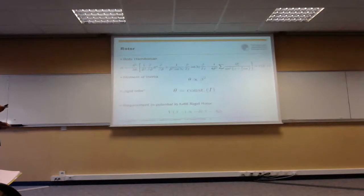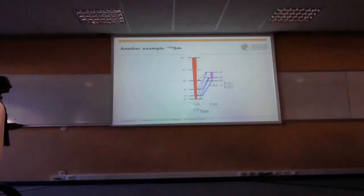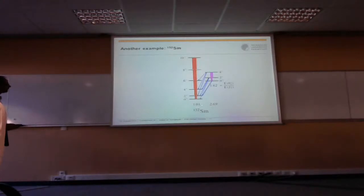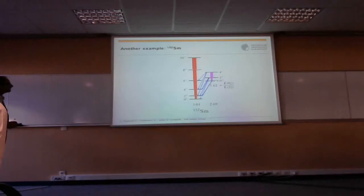Another example: Samarium-152 has historically played a very important role. There is the ground band with R42 = 3.01. There is also another K=0 band with 0+, 2+, 4+ and other states. This band has an R42 ratio of 2.69, and the 0+ state is close in excitation energy to the 6+ of the ground band, with a relative excitation energy to the first 2+ of 5.62.